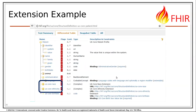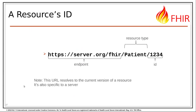Another important place where we use extensions is to meet national requirements. For example, in the US, we have a requirement to exchange information about the race and ethnicity of a patient. Other countries don't have that requirement, and in fact in some countries it's prohibited. This doesn't reach the level of the 80%, but it's still important in the US. So we define a set of national extensions called the US Core extensions, where we can tack on additional information — in this case, information about a patient's race and ethnicity.